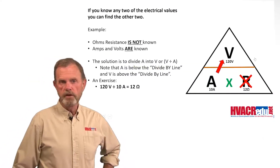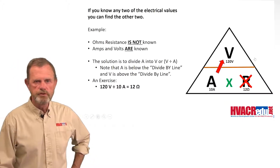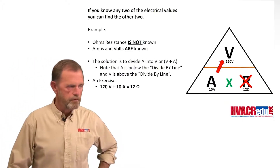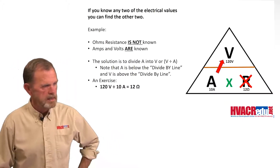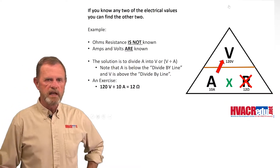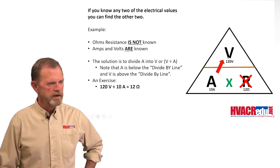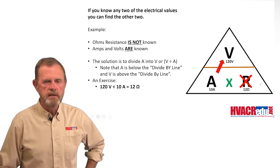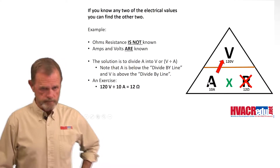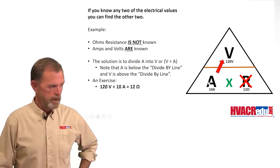The beauty of Ohm's Law: if you know any two electrical values you can find the other two. So for instance, as it shows here in the slide, if I know volts and amps I can find resistance — and it just so happens that if I know volts and amps I can also find wattage or power.